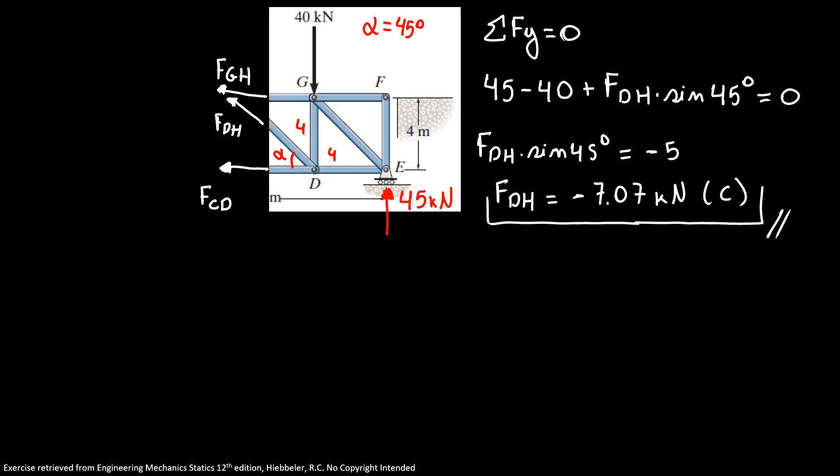Now we can use the sum of moments about point D, counterclockwise is positive, and then we're going to find the force GH. Now we have 45 times 4 plus FGH times 4 equals zero.